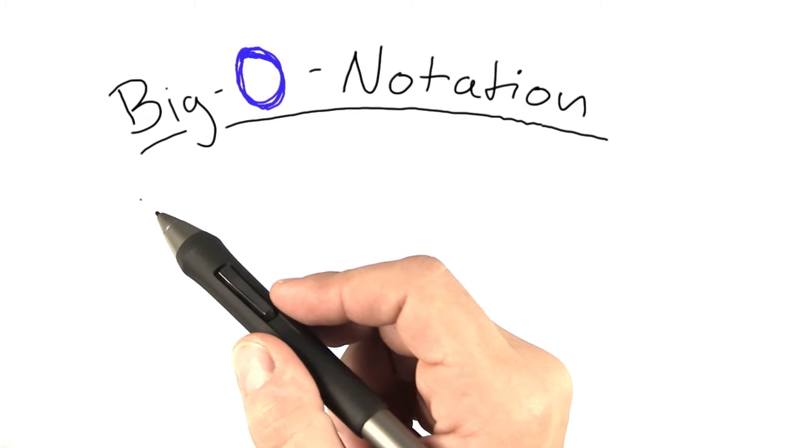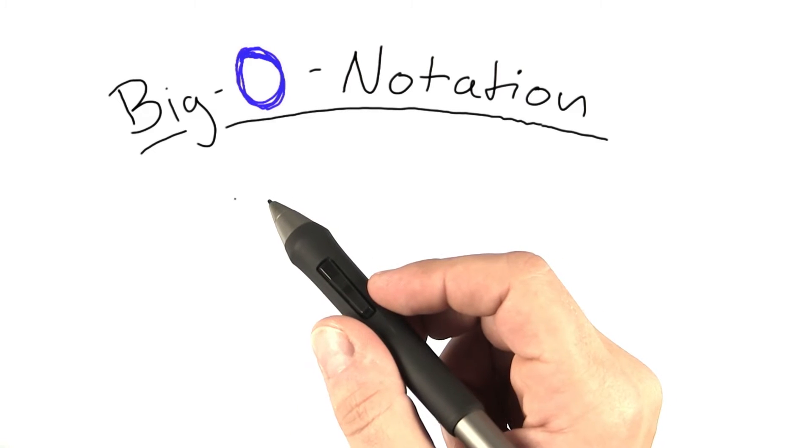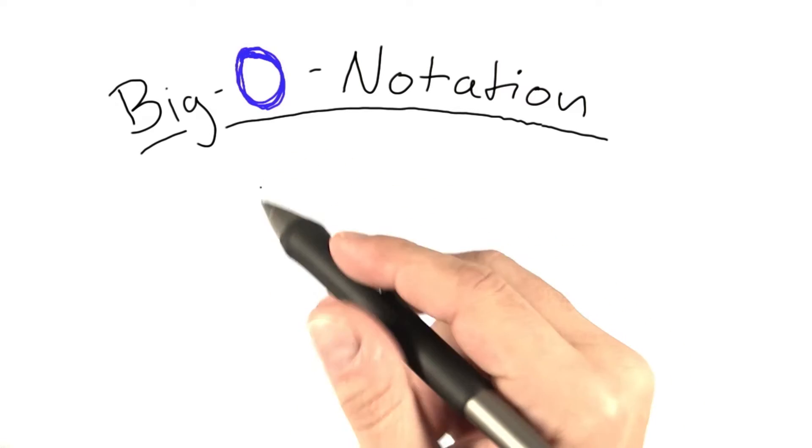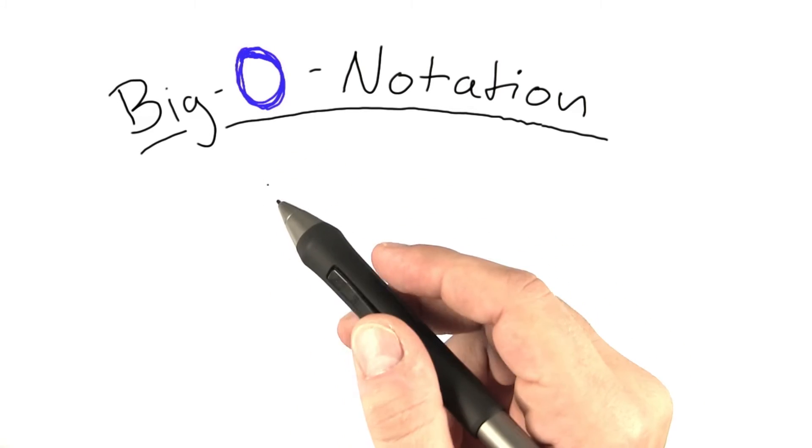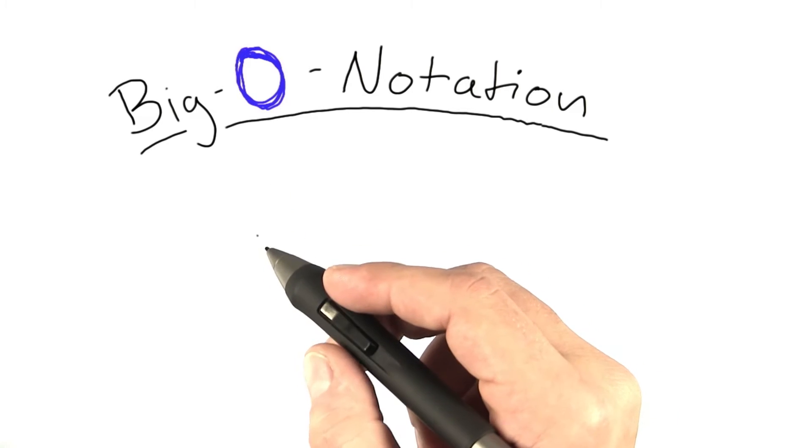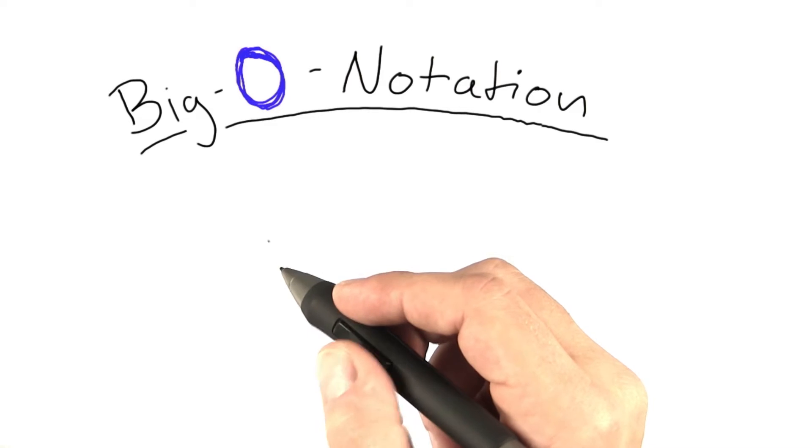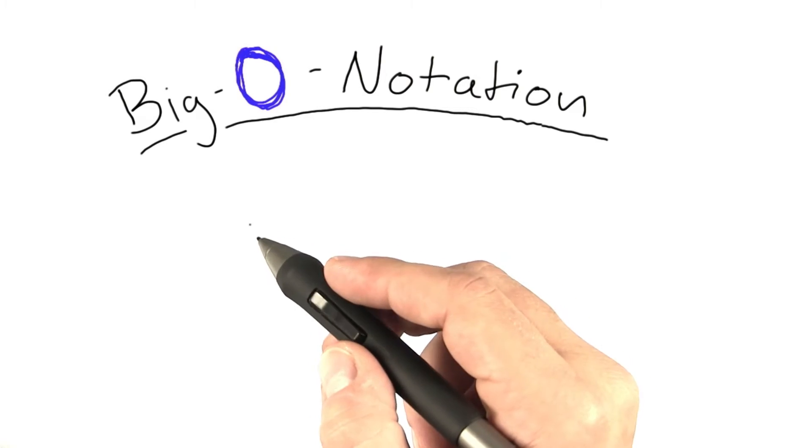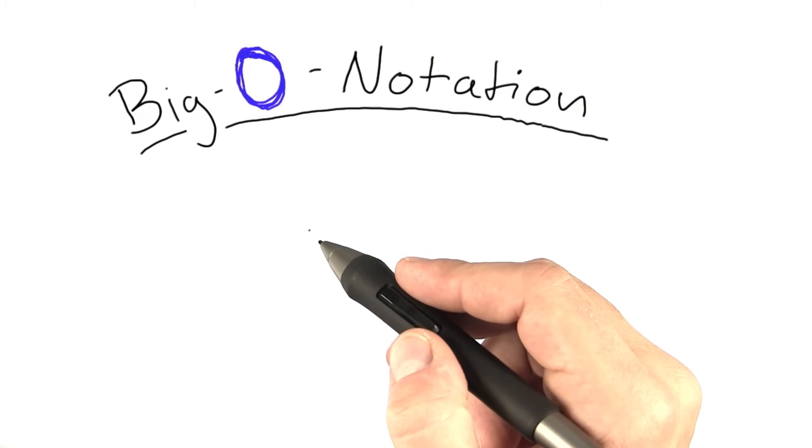As we've just seen, even talking about worst-case running time can be a bit tricky if we're trying to be very precise. So we have to identify the worst-case input in detail, which can be counterintuitive, and then work through a lot of different cases. And also, as you notice, it's annoying to have to count every single step an algorithm makes.